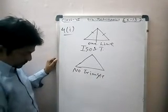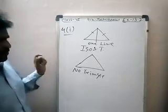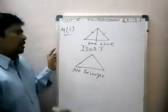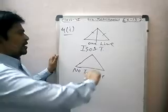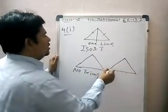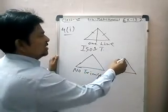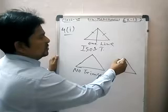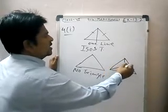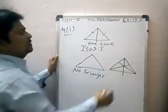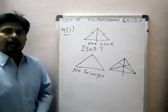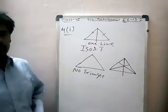Exactly three lines of symmetry possible — which figure has three lines of symmetry? Equilateral triangle. An equilateral triangle has three lines of symmetry: first, second, and then third. Three lines of symmetry possible in equilateral triangle.